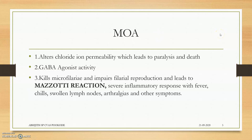The mechanism of action: ivermectin alters the chloride ion permeability of glutamate-gated chloride channels and chloride-mediated channels. This leads to hyperpolarization — a greater amount of chloride enters the post-synaptic cell — so nerve impulse transmission is blocked. Ivermectin also acts as a GABA agonist, binding to GABA receptors on neurons and opening chloride channels, allowing more chloride into the cell.